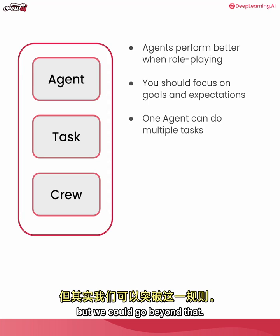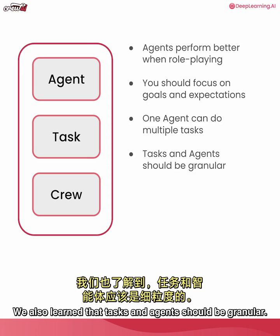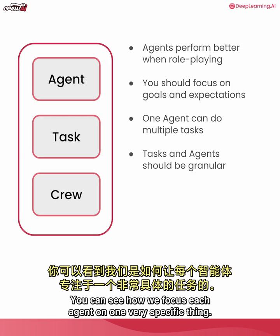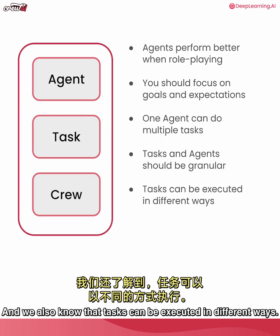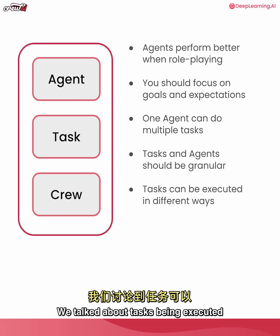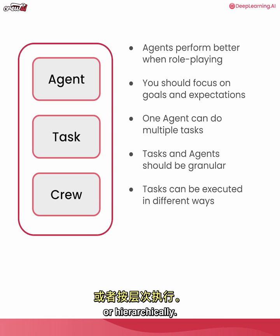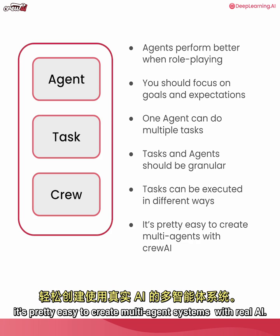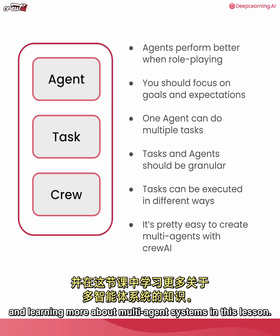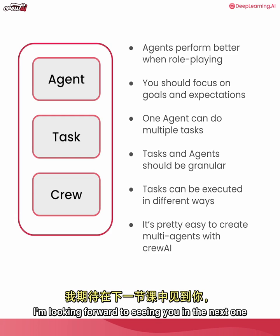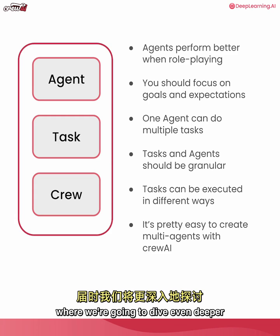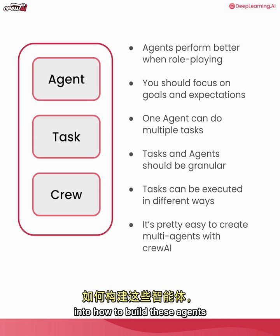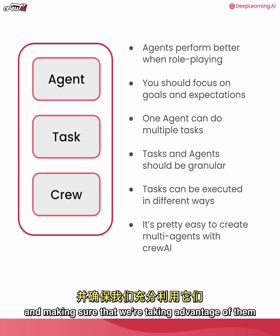One agent can handle multiple tasks if you want - in our use case we had one agent per task, but you can go beyond that. Tasks and agents should be granular; we focused each agent on one very specific thing. Tasks can also be executed in different ways - in parallel, sequentially, or hierarchically - and we'll dive into all of that in future lessons. It's pretty easy to create multi-agent systems with CrewAI. Thank you for sticking around and I look forward to seeing you in the next lesson where we dive even deeper into building agents and making the most of their tools.